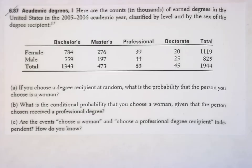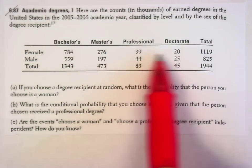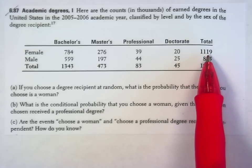So if you choose a degree recipient at random, what's the probability that the person you chose is a woman? Well, we need to look then at the female total. Although this is in thousands, this is really 1,119,000. I'm not going to describe it in terms of thousands anymore. I'm just going to describe it in terms of the counts you see in the table.